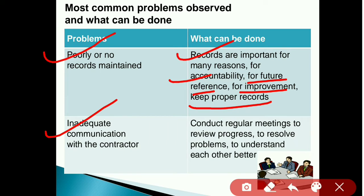Inadequate communication with the contractor is a basic problem on site — sometimes we don't communicate with the contractor at all. The solution is to conduct regular meetings to review progress, resolve problems, and understand each other better. To bridge the communication gap, regular meetings must be conducted to review what is happening on site and how to resolve issues.